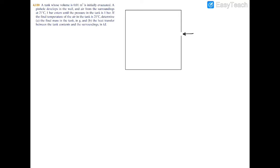The tank will have a pinhole, and air is going to enter inside of it. The volume of this tank is 0.01 cubic meters. Outside air enters at a temperature and pressure of 21 degrees Celsius and 1 bar, and when it's finished entering, we'll have a pressure of 1 bar inside the tank.